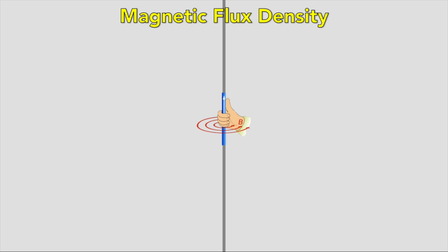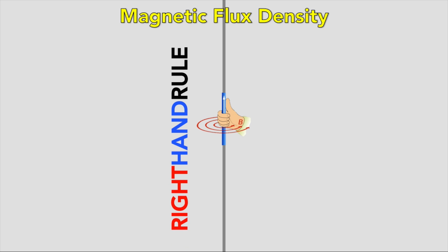The direction of the field around the wire can be worked out with the right-hand rule. If you loop a current-carrying wire into a coil, then the field is donut-shaped.